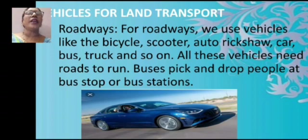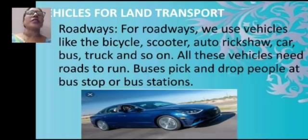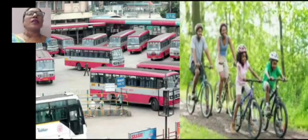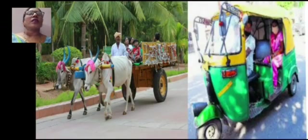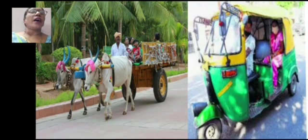All these vehicles need roads to run. Buses pick and drop people at bus stops or bus stations. Here is a picture of a bus station, and in the second picture, some people are riding on a bicycle. Here is another picture of a bullock cart, which is used in rural areas, and the next one is an auto.